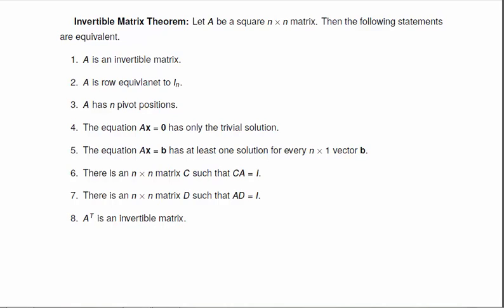So if A is a square n-by-n matrix, the following statements are equivalent. So this means either every single one of these are true, or every single one of them are false, depending on the matrix you're talking about.